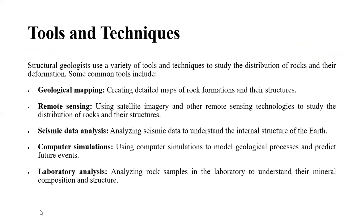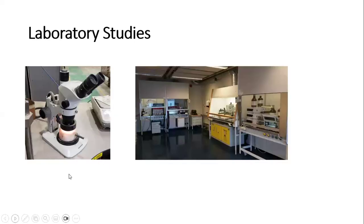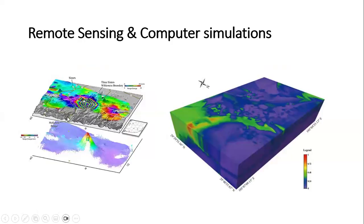In the laboratory, you use microscopes and analytical tools such as XRF, XRD, SEM, and many other analytical equipment to understand rock textures, mineral composition, mineral structures, and many other things. This helps the structural geologist understand the nature of rocks and minerals in a particular area of investigation.